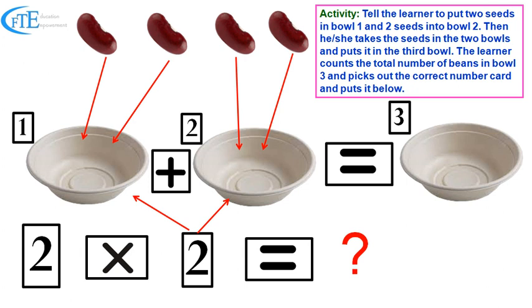Each of these two bowls will have two counters, two objects. So two objects multiplied into two means it is repeated addition two times. They put two counters into the first bowl and then two counters into the second bowl.